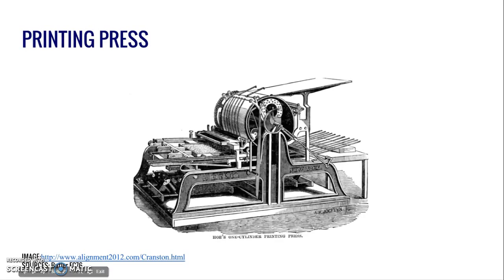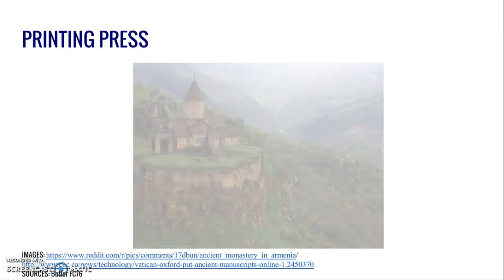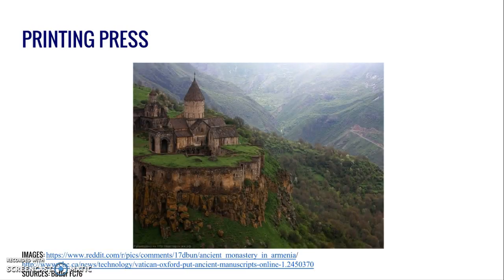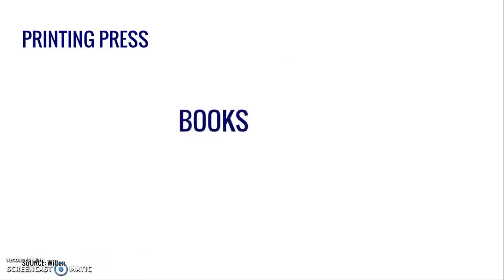An extremely important innovation which influenced the popularization of the English language was the arrival of the printing press. During the Renaissance, most texts were religious and written in Latin, kept in monasteries where they weren't accessible to everyone. With the invention of the printing press, old texts were preserved and new Renaissance ideas could be spread more quickly and accurately and with less resistance from the church. Books became less expensive, literacy became more common, and printing became an industry that brought Latin texts to the literate population.